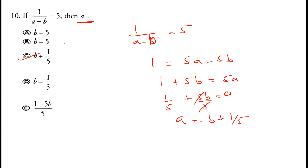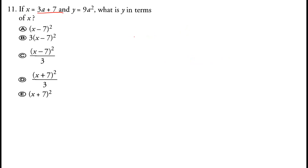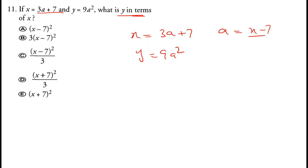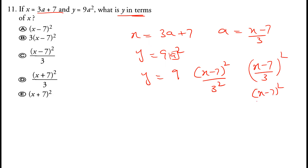Question 11: x equals 3a plus 7 and y equals 9a squared. Find y in terms of x. Solving for a: a equals (x minus 7) divided by 3. Substituting into y: y equals 9 times (x minus 7) squared divided by 9, and the 9s cancel, giving y equals (x minus 7) squared. The correct answer is A.